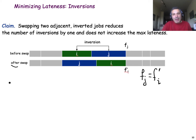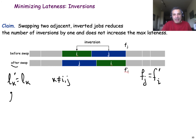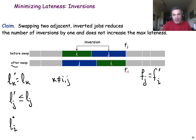Imagine the optimal schedule includes an inversion between two consecutive jobs I and J. Suppose the only change I make is to swap the order of J and I, leaving everything else unchanged. I will use prime notation for quantities after the swap. The finish time of job J in the original schedule equals the finish time of job I in the new schedule, since I've just swapped these two consecutive jobs and there is no idle time.